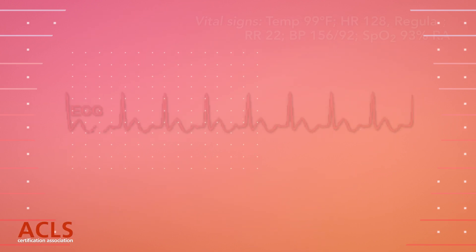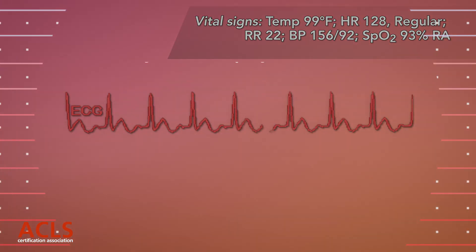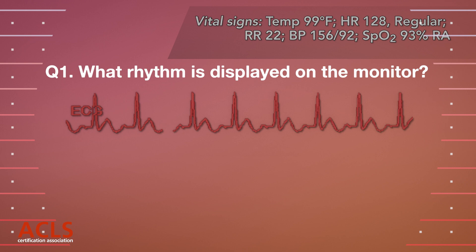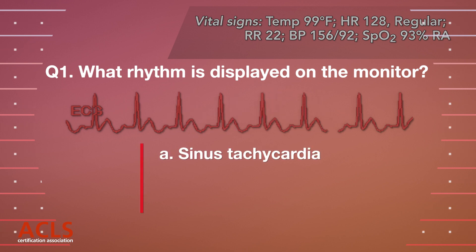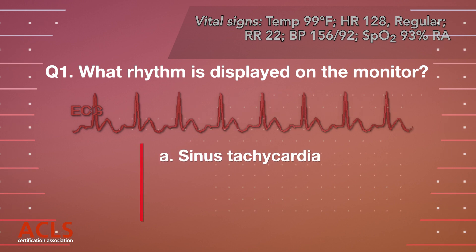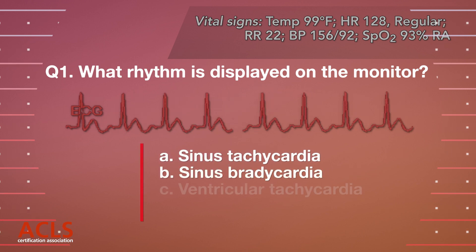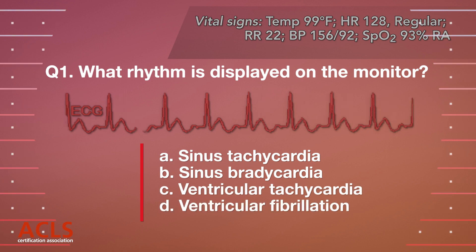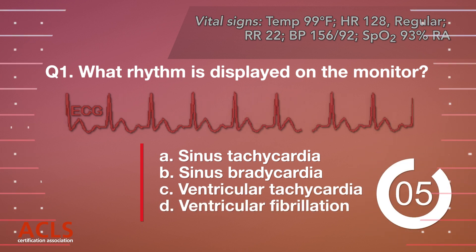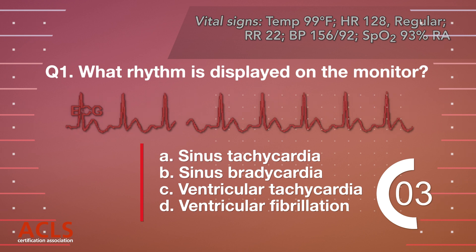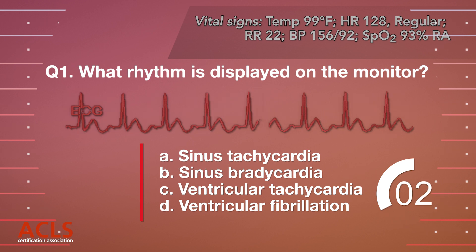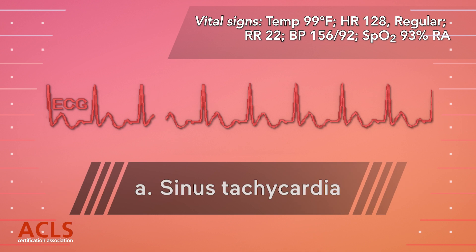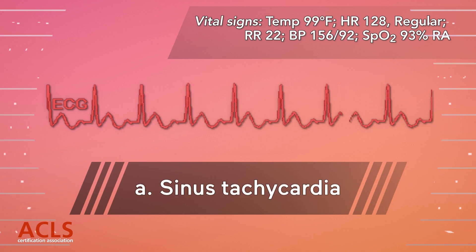The monitor reveals the following. What rhythm is displayed on the monitor? A, B, C, D. Correct answer: A. Sinus tachycardia.